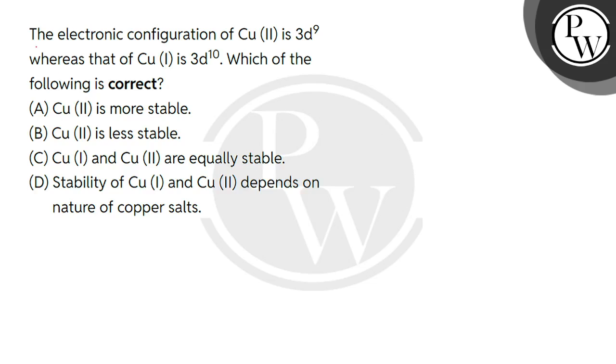Hello students, let's see this question. The question says the electronic configuration of Cu(II) is 3d9 whereas that of Cu(I) is 3d10.